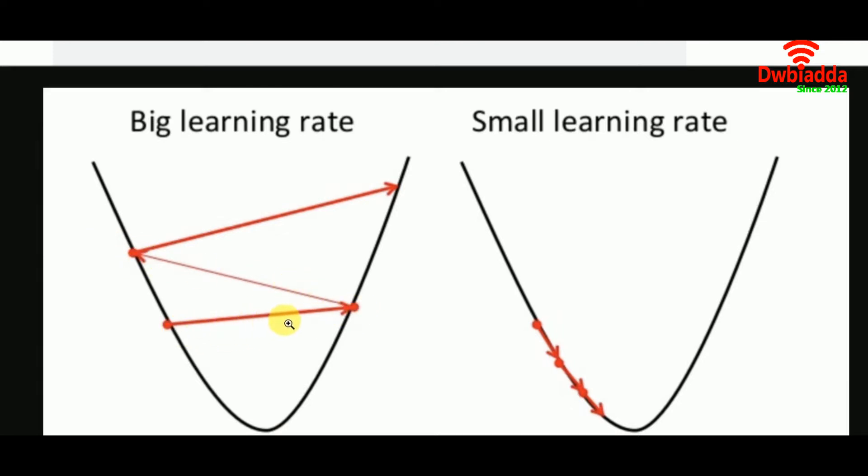The problem with having a very small learning rate is that the steps get smaller and smaller each time. As it gets to the global minima, it takes infinitely many small steps, allowing you to never reach the global minima.